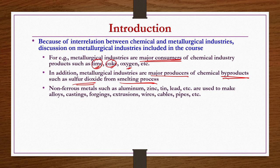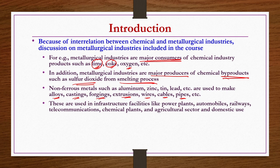Non-ferrous metals such as aluminum, zinc, tin, lead, etc. are used to make alloys, castings, forgings, extrusions, wires, cables, pipes, etc. All these markets have some connection with chemical industries because they are further used in infrastructure facilities like power plants, automobiles, railways, telecommunications, chemical plants, agricultural sector, and domestic uses. In most of these sectors, one way or another, chemical engineering contribution is required.